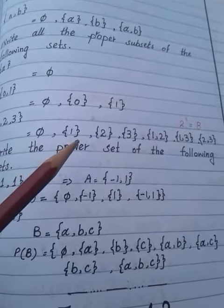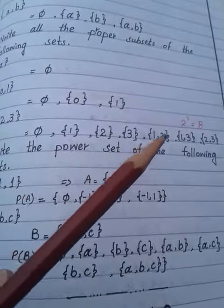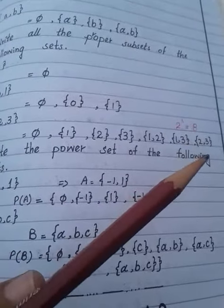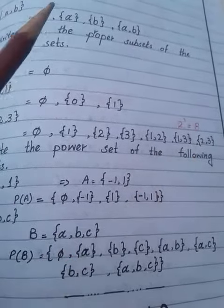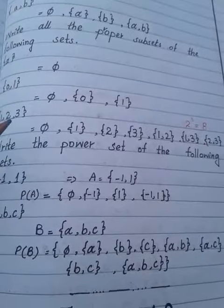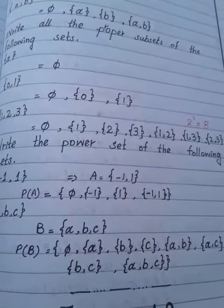You will write first null set, then single element set, single element set, single element set, then 1 and 2, then 1 and 3, then 2 and 3. Last part 1, 2, 3 you will not write because at 1, 2, 3 same like question part, and this will make them proper subset.